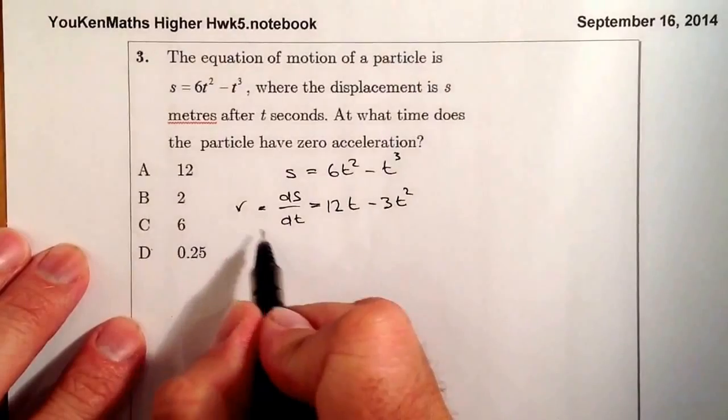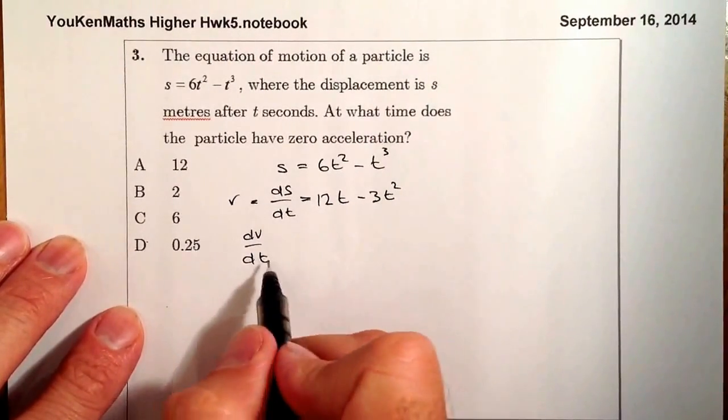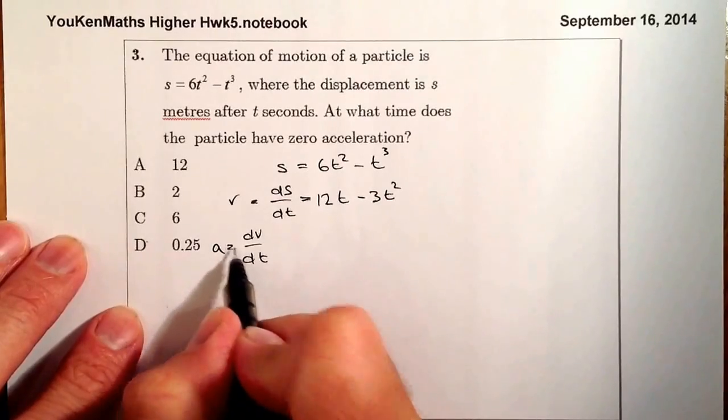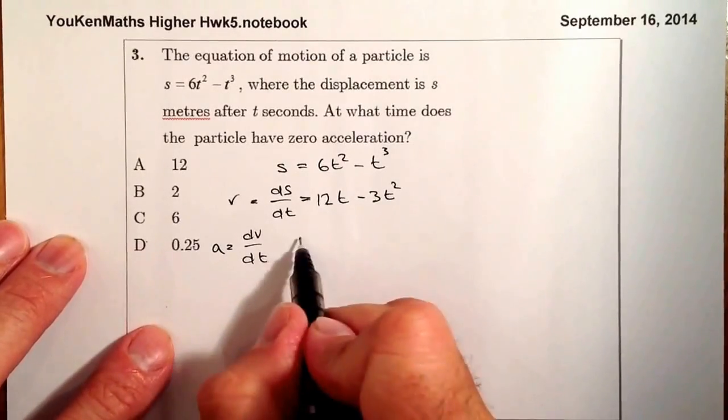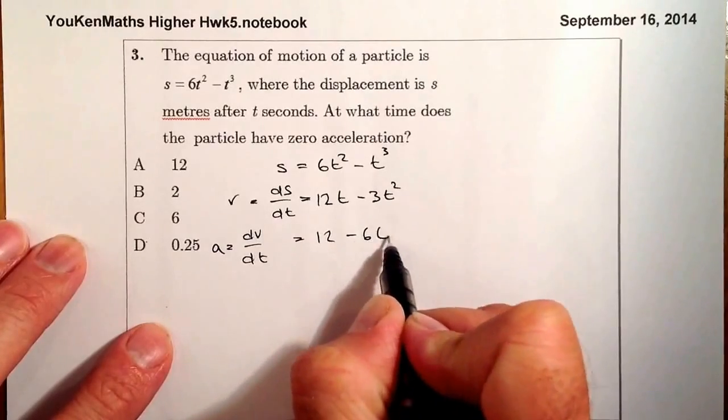Now what I'm going to do is differentiate velocity with respect to time, and that'll give me an acceleration formula. That's going to give me 12, and that's going to be minus 6t.